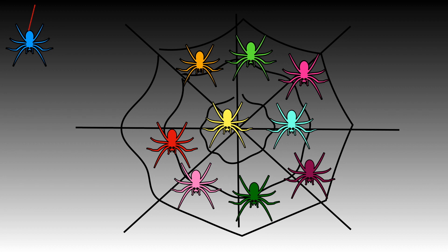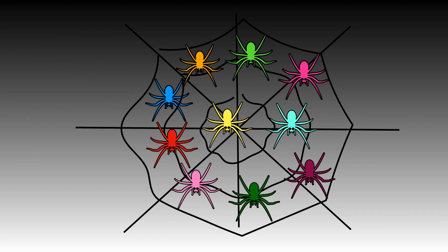There are nine spiders in the web. One more spider arrives. How many spiders will there be altogether in the web? Show me with your fingers. One, two, three, four, five, six, seven, eight, nine, ten. There will be ten spiders altogether. Nine and one more is equal to ten.